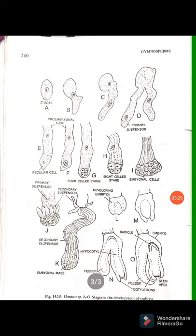As seen in figure N, the feeder is internally differentiated into epidermis, cortex, vascular bundles, and pith. Polyembryony in the ovules of Netum oola and Netum nemen has been reported by many workers; however, only one embryo attains maturity and the rest degenerate — as is the case in many other gymnosperms.